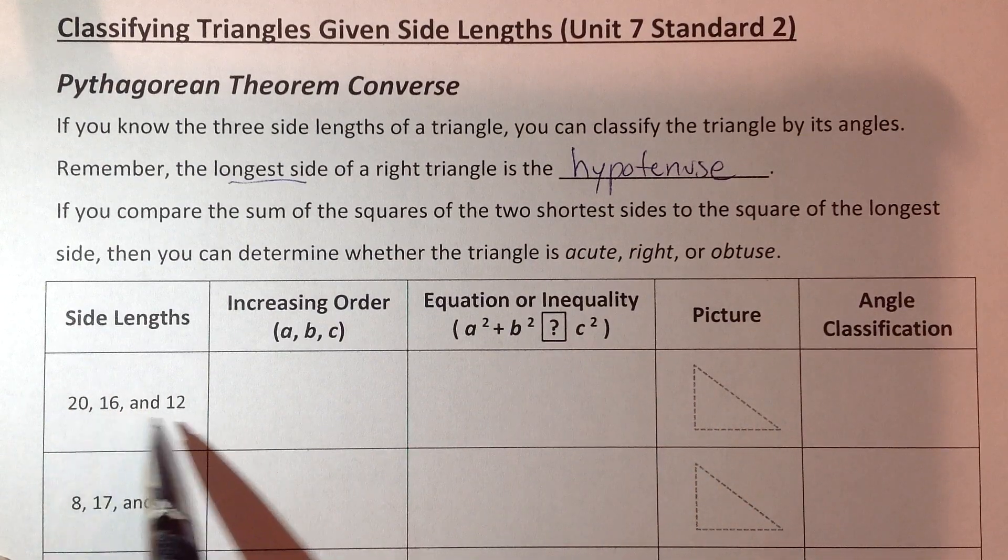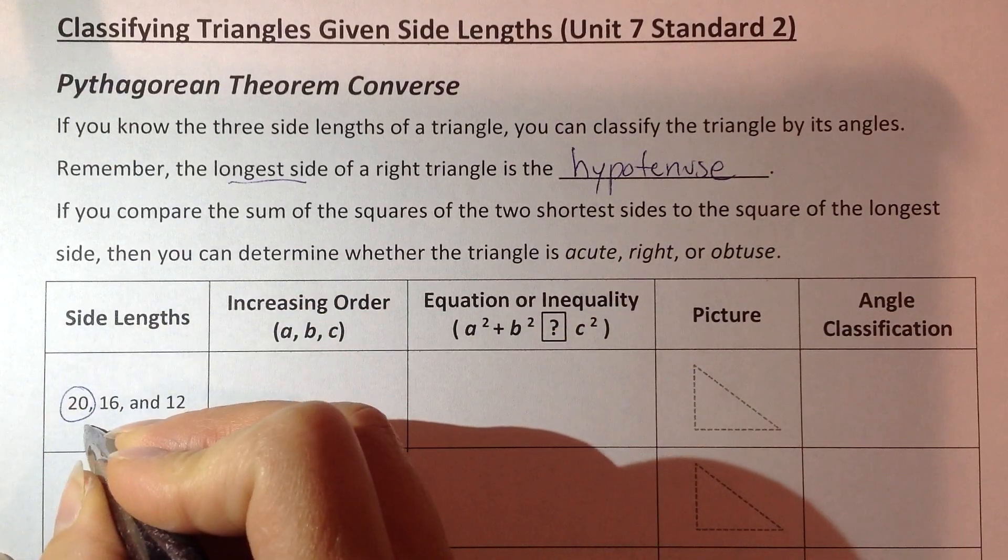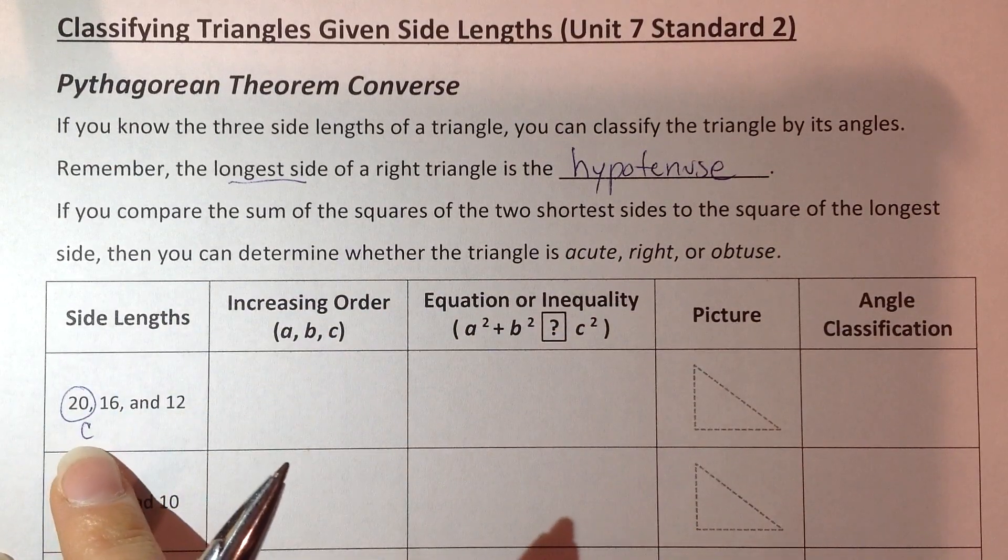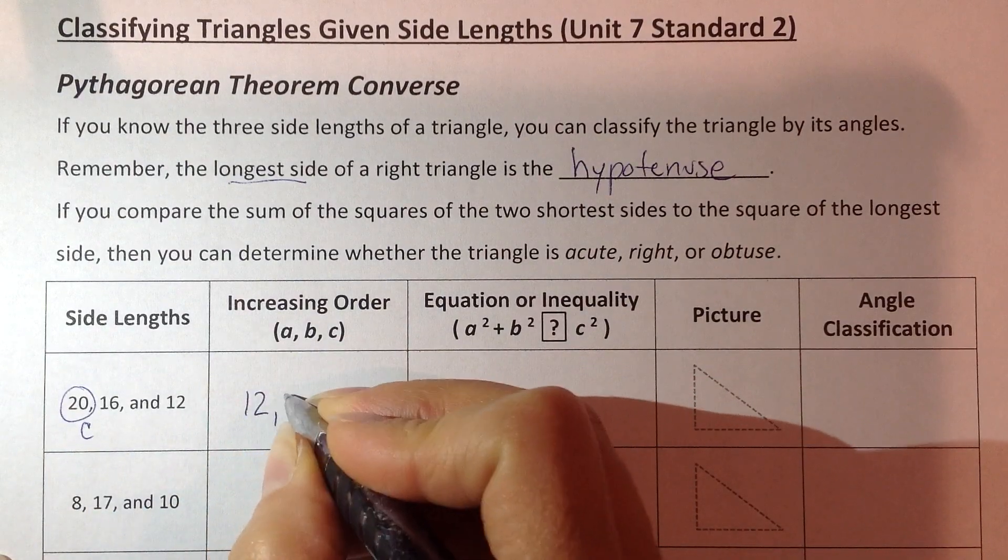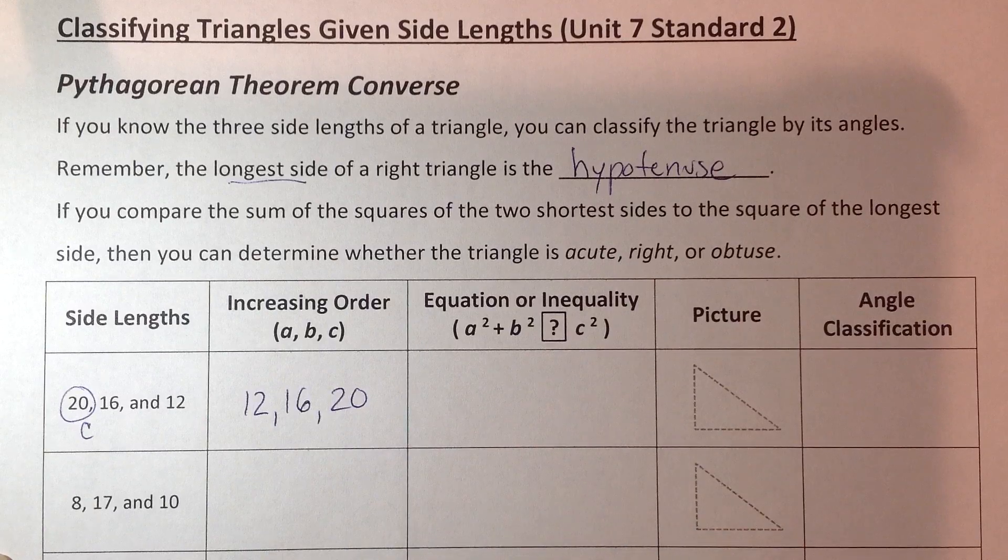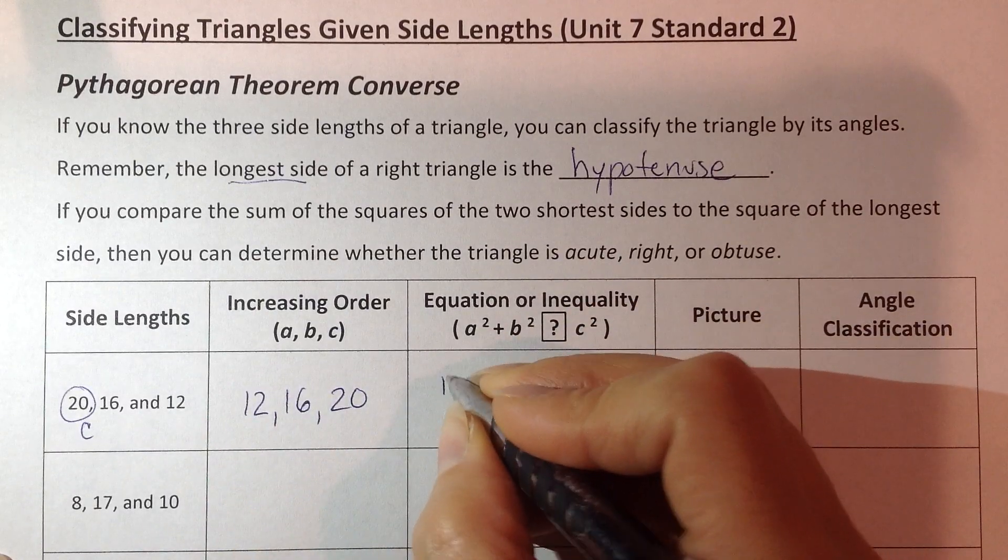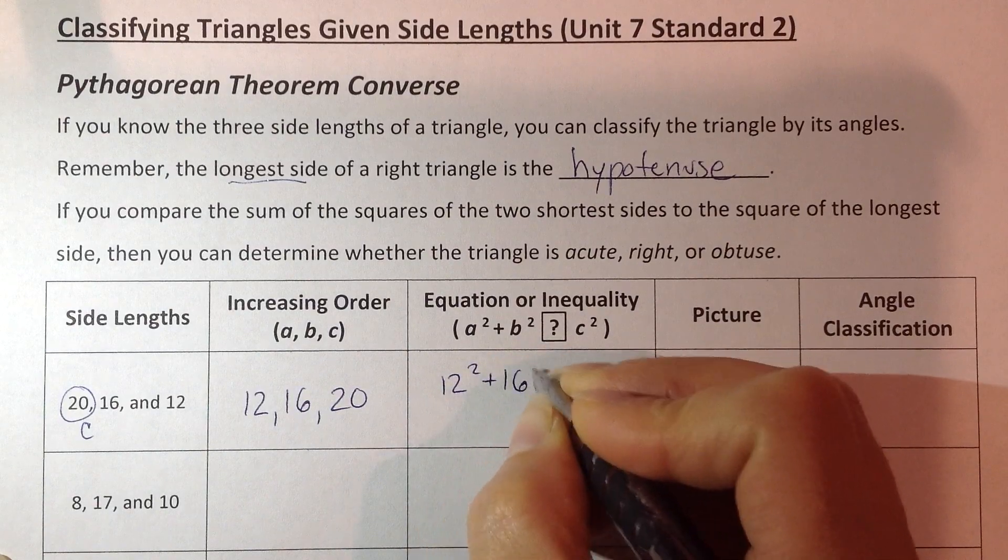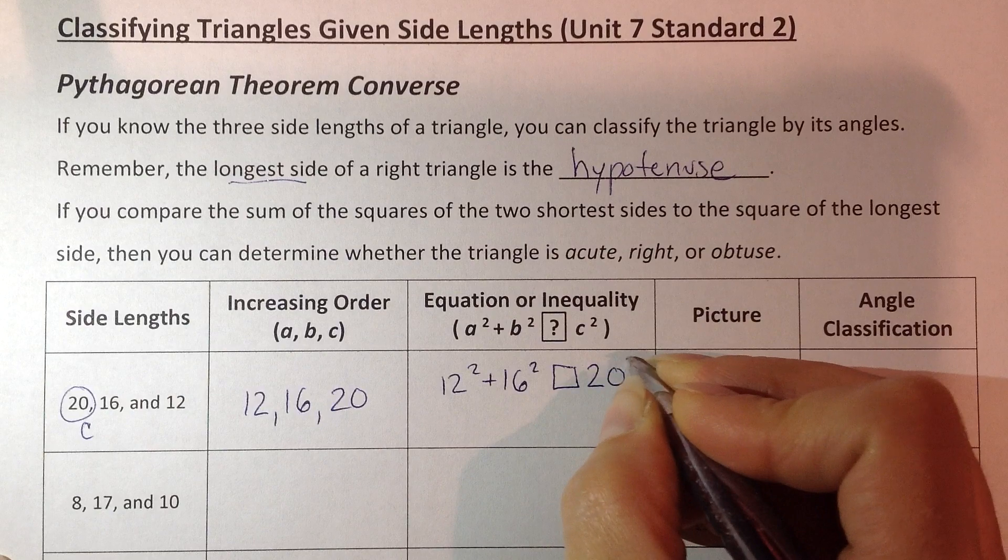So here's an example of what we're going to do. We're going to look for the longest side. That's the most important step right now, because we want to identify which one is going to be put into C. If it helps, you can list all those in increasing order to make sure that you're putting the first two in A and B. How does that compare to the longest one, the square of the longest?